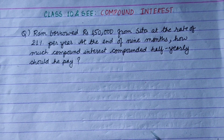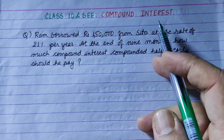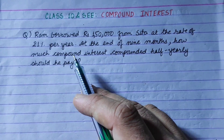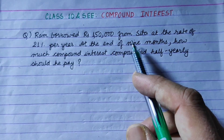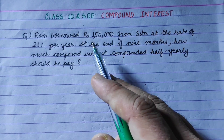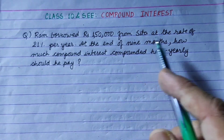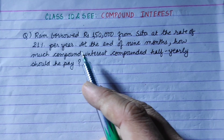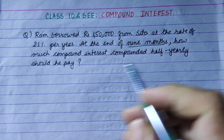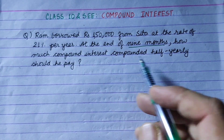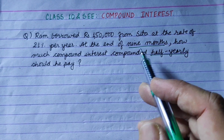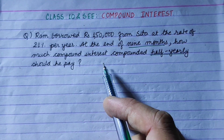Hi everyone. This is a Class 10 compound interest problem — an important question. Ram borrowed Rs. 1,00,000 from Sita at the rate of 21% per year. At the end of nine months, how much compound interest compounded half-yearly should he pay?